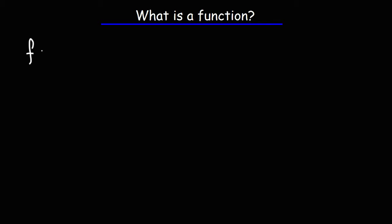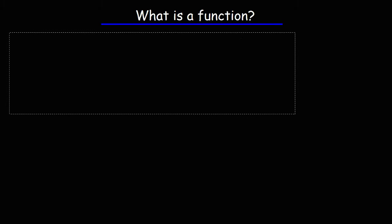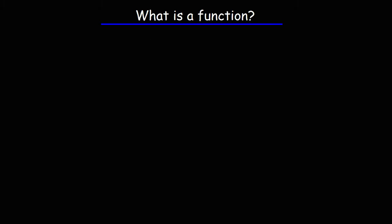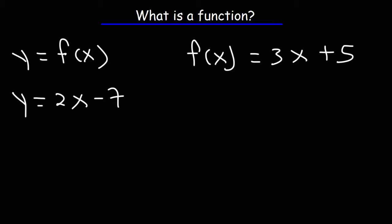Here are some examples of functions. f is a function, g is a function of x, and so is h. But most commonly you'll see f of x as a function. y is equal to f of x. So f of x could be anything — for example, 3x plus 5, or 2x minus 7. Those are all examples of functions, including linear functions.